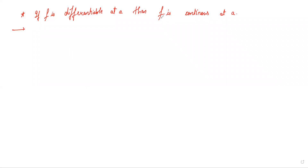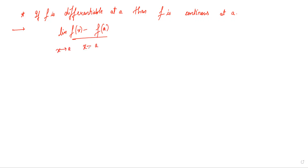To prove f is differentiable at a implies f is continuous at a: we have the limit of [f(x) minus f(a)] divided by [x minus a] as x tends to a, which exists and equals f'(a). We know this limit exists since f is differentiable at a.